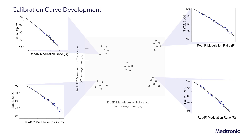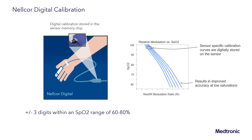In that method, we build up a transfer function so that we can calculate what the correct calibration coefficient should be for that wavelength combination of the sensor. What we can see then is that we have a method to convert our measured LED wavelengths at manufacturing to unique calibration curves. We employ this with Nelcor's digital calibration. Here, a digital calibration is stored or programmed onto the memory chip, and that digital calibration is representative of the sensor's wavelengths — specifically their measured wavelengths at manufacturing. This allows us to calculate unique calibration curves, and by doing that we're able to see a dramatic improvement in performance at low saturations where those absorption coefficients change the most. We're able to achieve that plus or minus three digits of accuracy within that range of 60 to 80.